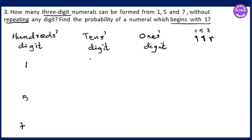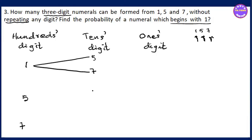You can see that 1 divided by 1 is equal to 7. You can see that it is equal to 3. So if you see that 5 is equal to 5, you can see that 5 is equal to 7. It is equal to 5.